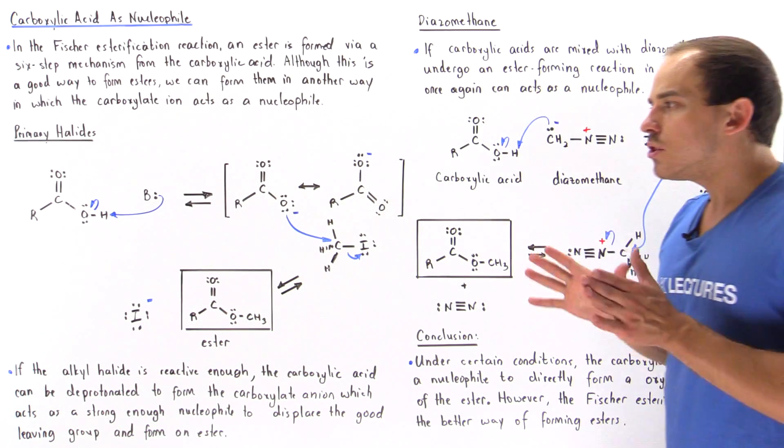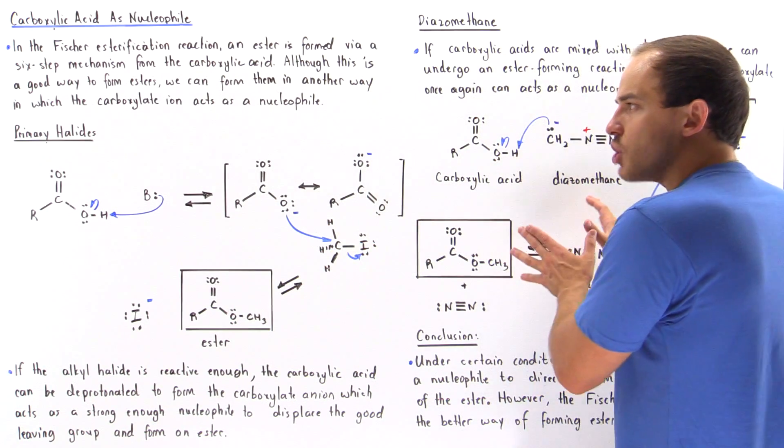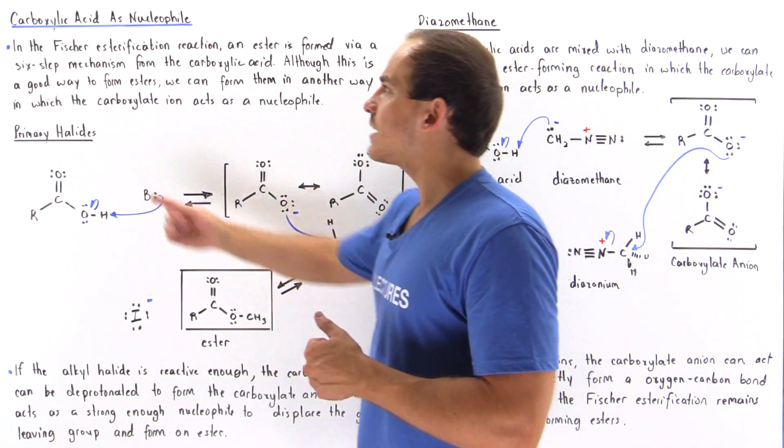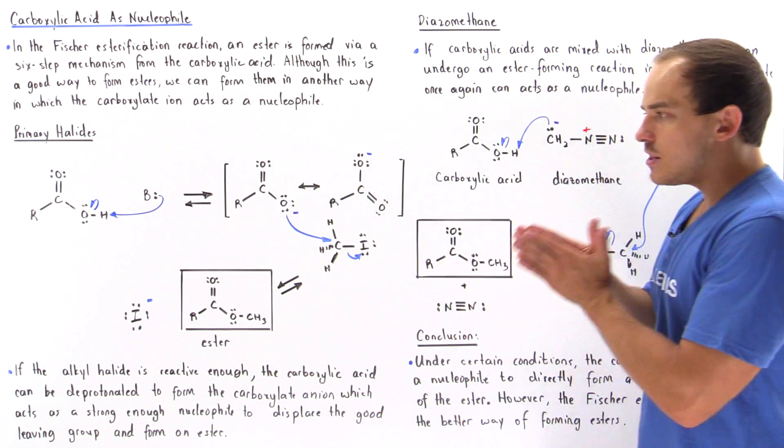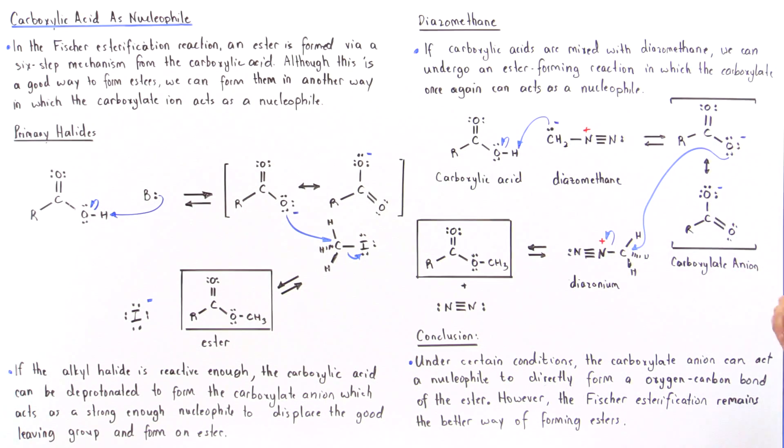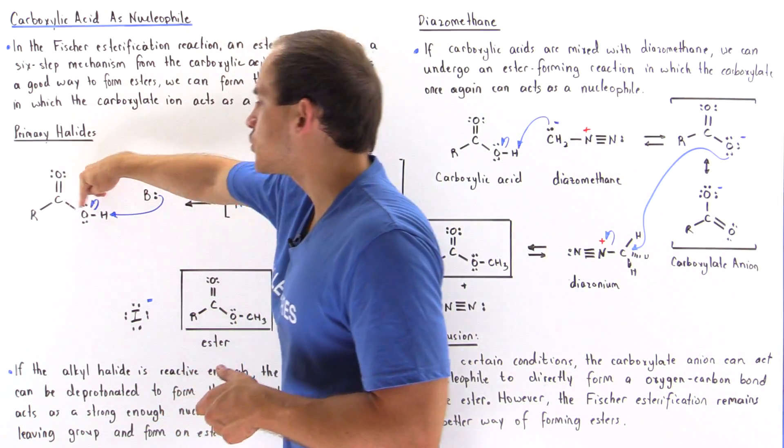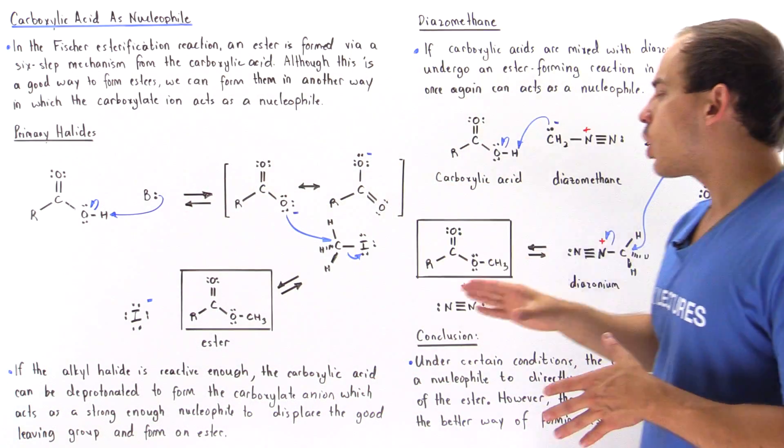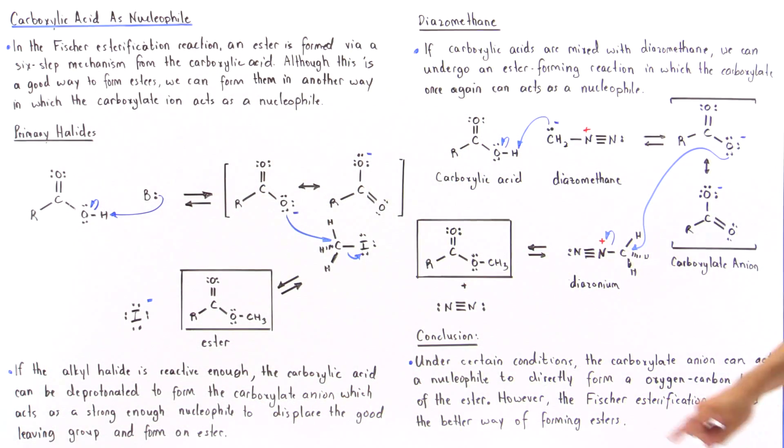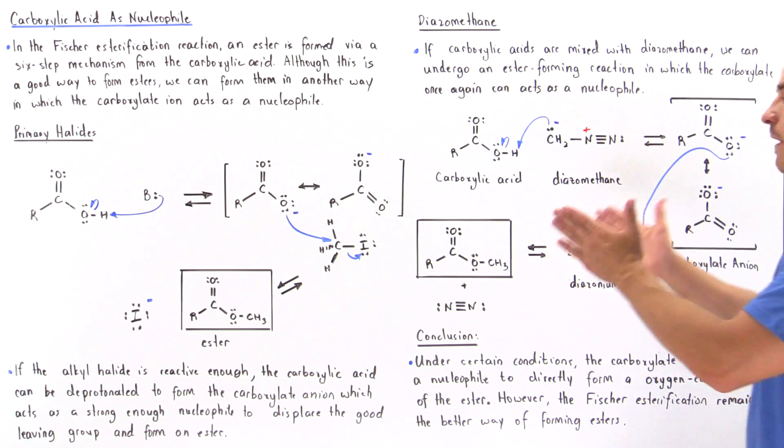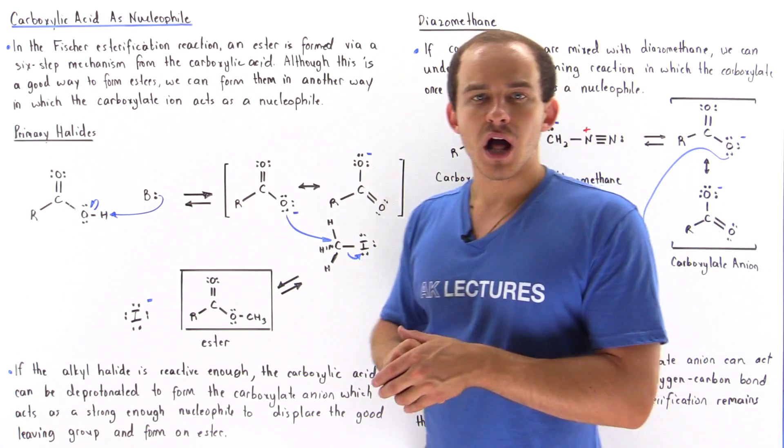So although these two methods are less efficient than the actual Fischer esterification reaction, in these two reaction mechanisms we do not actually have to break the carbon-oxygen bond in our carboxylic acid. So we see that under certain conditions, the carboxylate anion can act as a nucleophile to directly form an oxygen-carbon bond of our final product, the ester product.